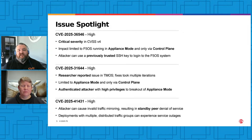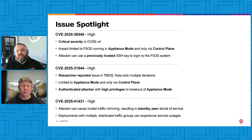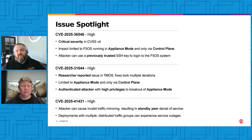CVE-2025-41431 is also a high. An attacker can cause invalid traffic mirroring, resulting in the standby peer denial of service. In deployments with multiple distributed traffic groups — where some are active on one device and others are active on the peer device — this could cause a traffic outage if the peer device crashes while there are active traffic groups on it.